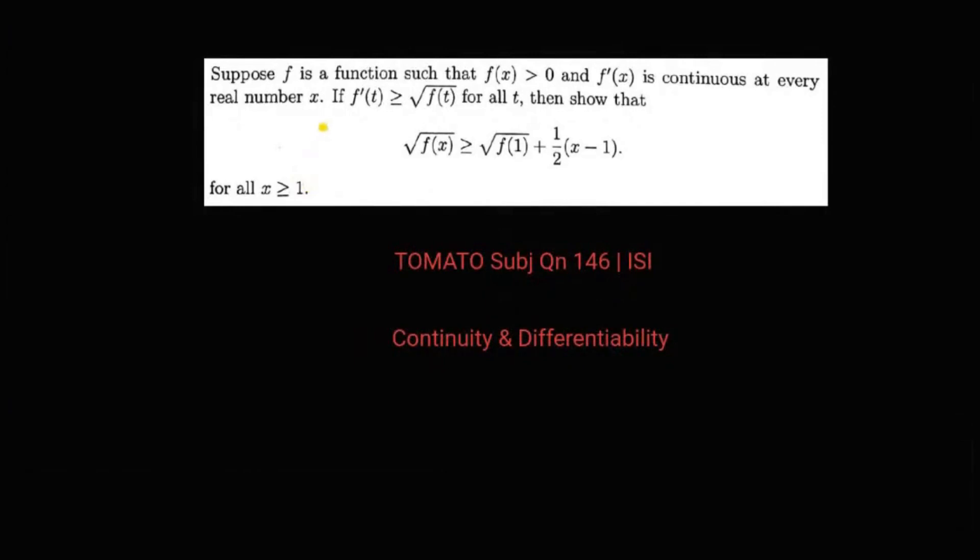Here it is given that F is a function such that F takes only positive values for all X belongs to real numbers and F dash X is continuous at every X belongs to real. Also, it is given that F dash T is greater than or equal to square root F T for all T. Then we are told this for all X greater than or equal to 1.